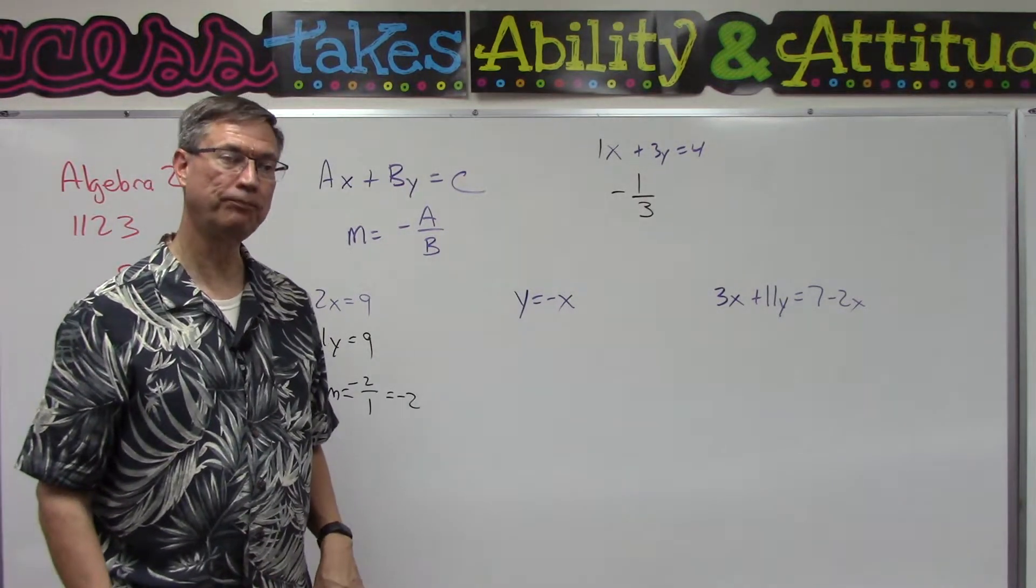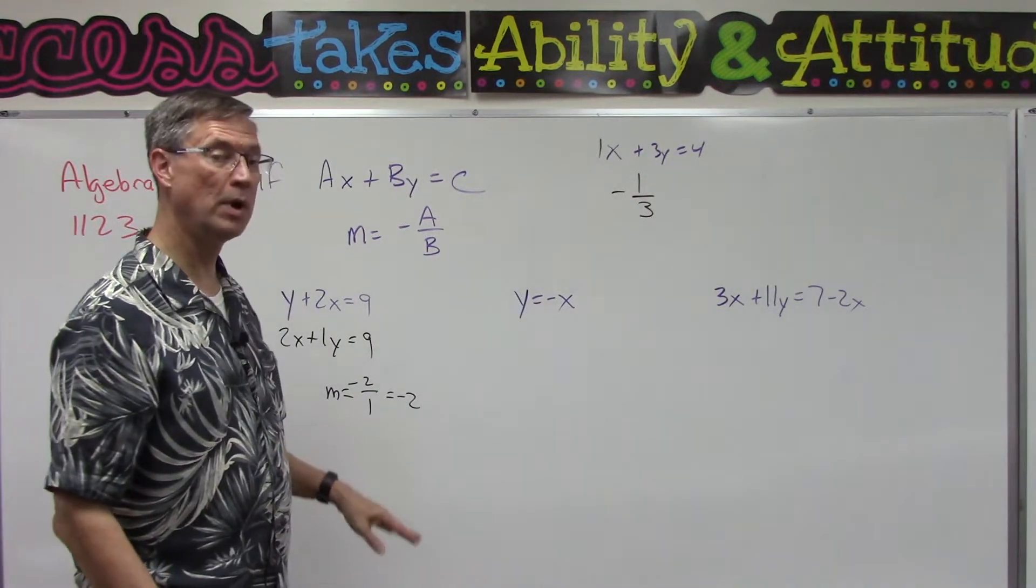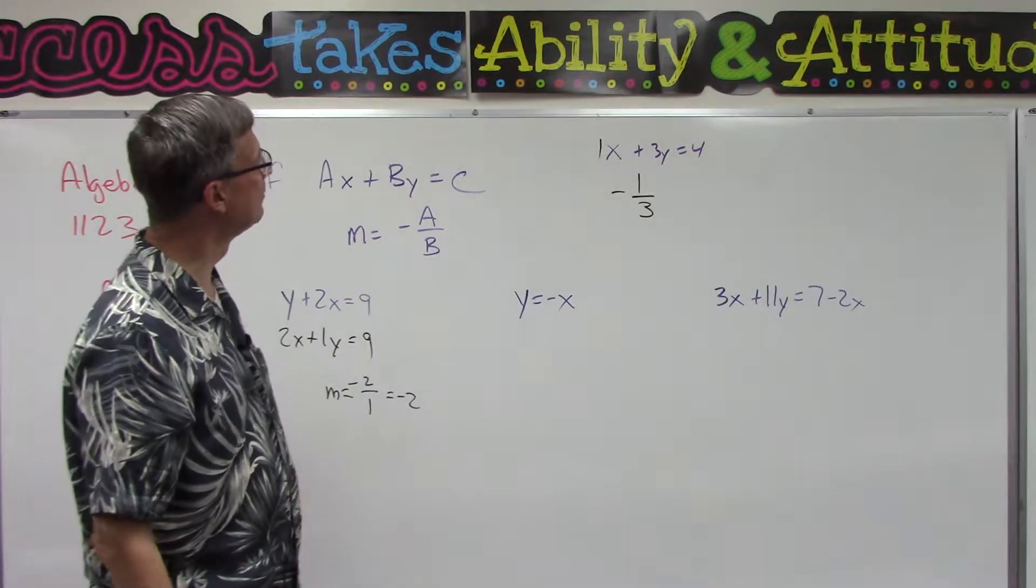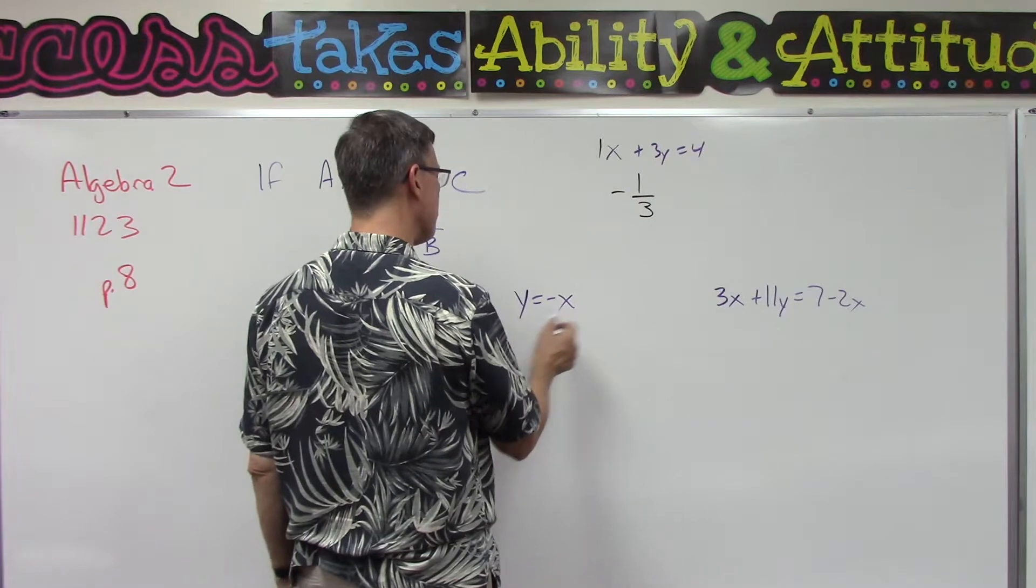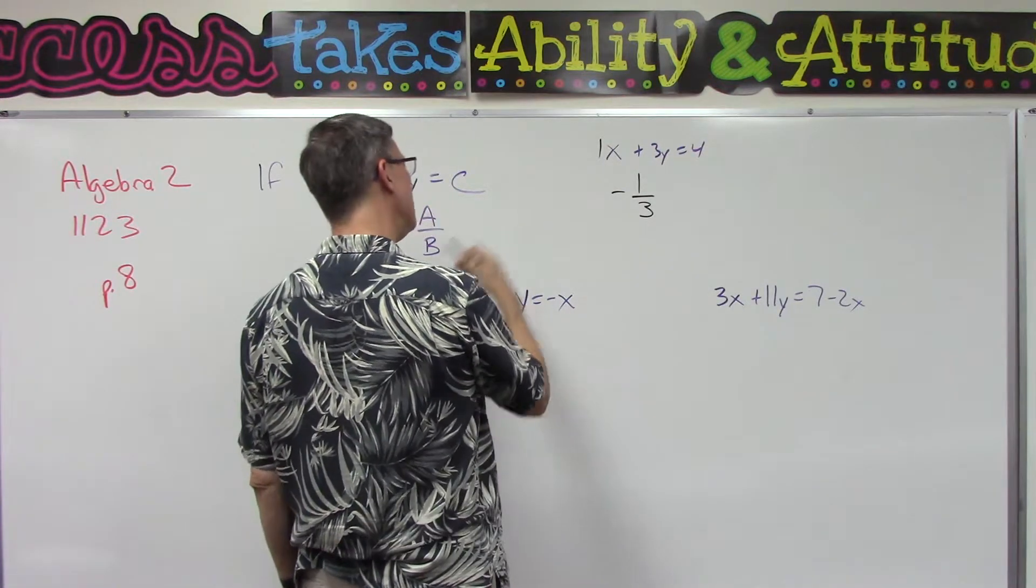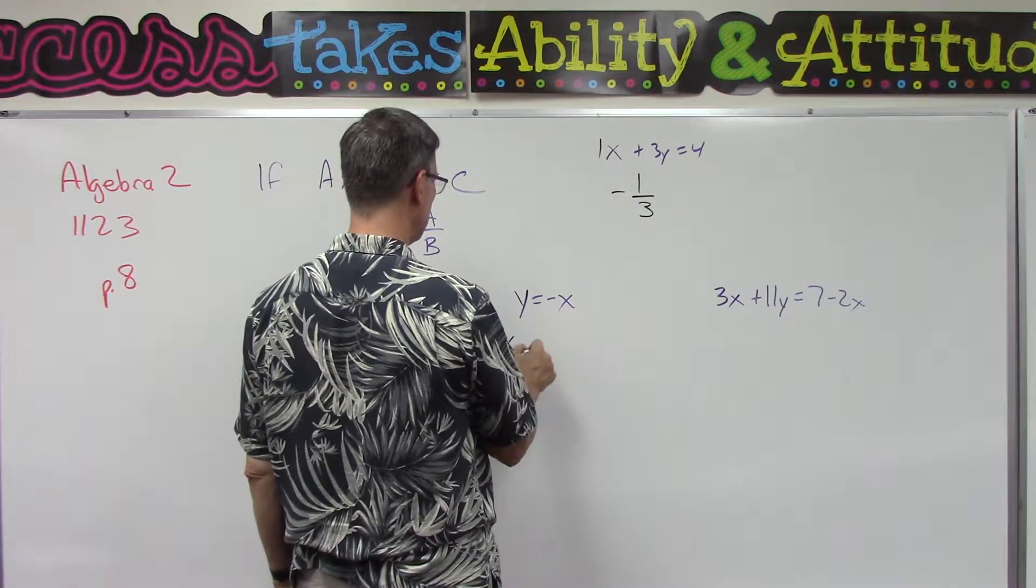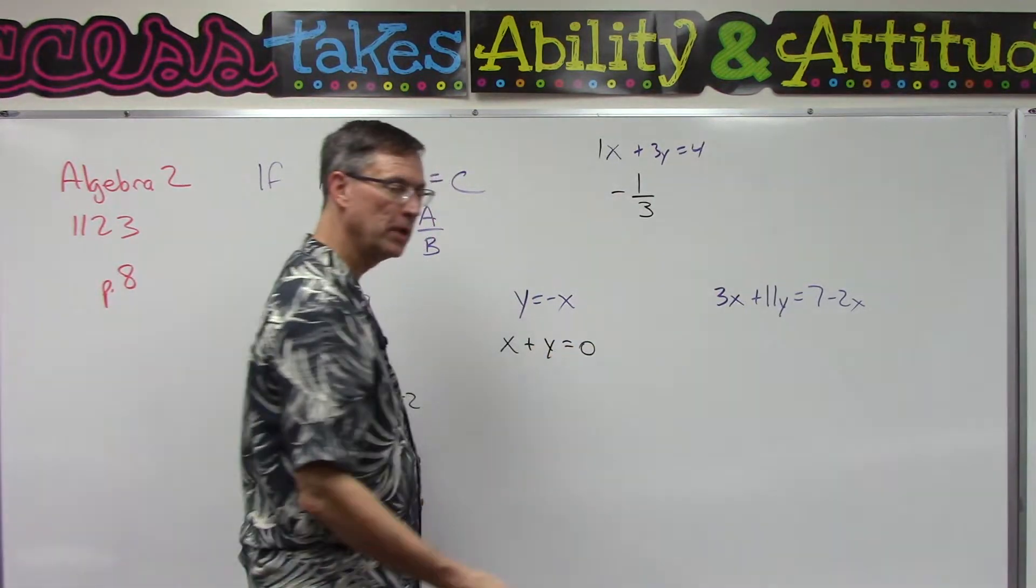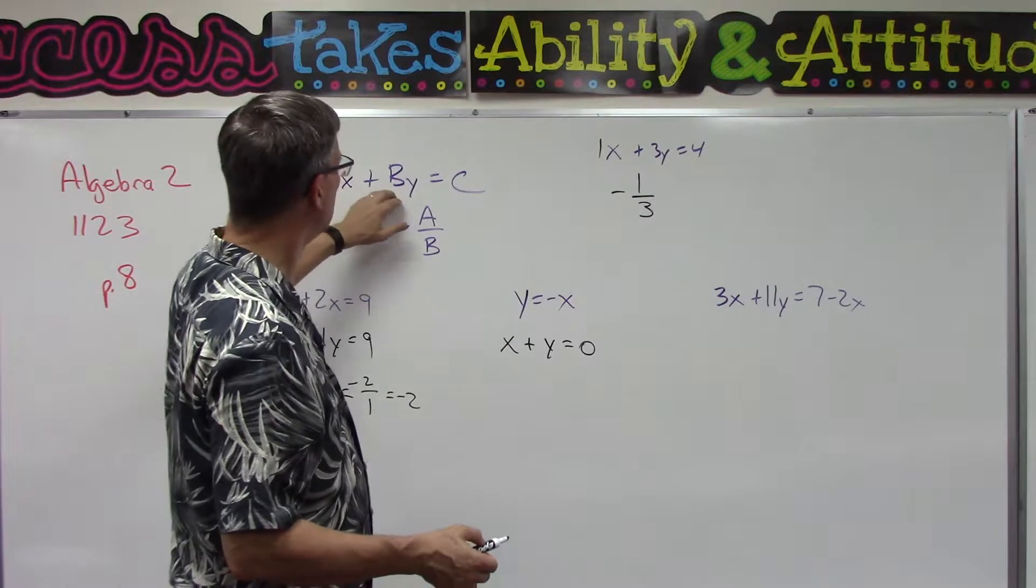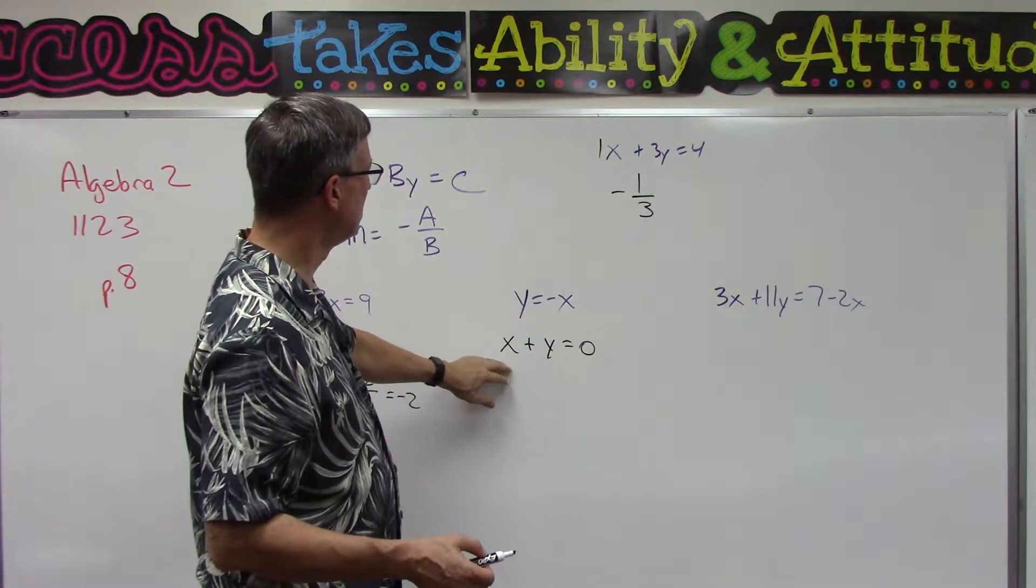And in the key they're probably just going to say negative 2. I don't think they're going to have over 1. We can assume it's over 1 if we don't have a denominator. Here's an interesting one. Again, we need to bring the x over, so x plus y equals zero.